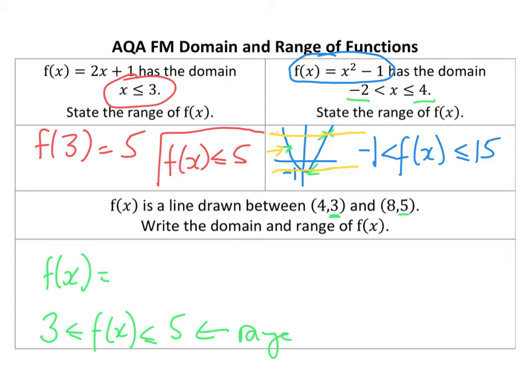I'm going to do that by finding the gradient between those two points. Gradient is the rise over the run, so we've got 2 over 4, which is a half.